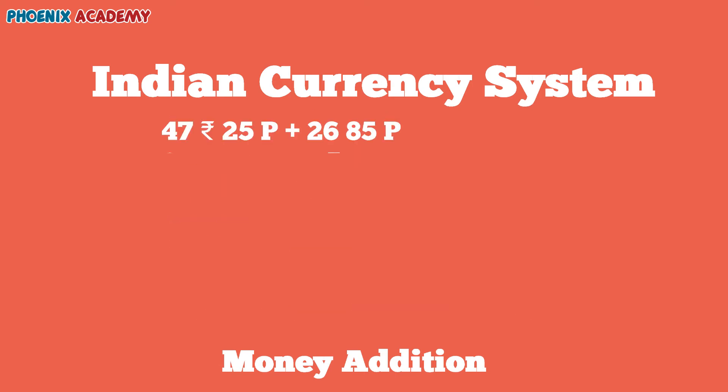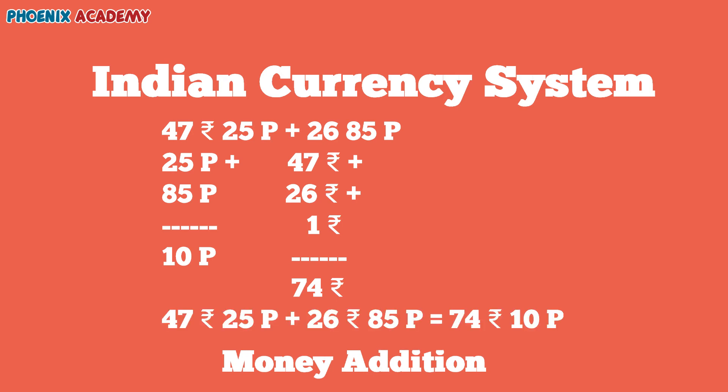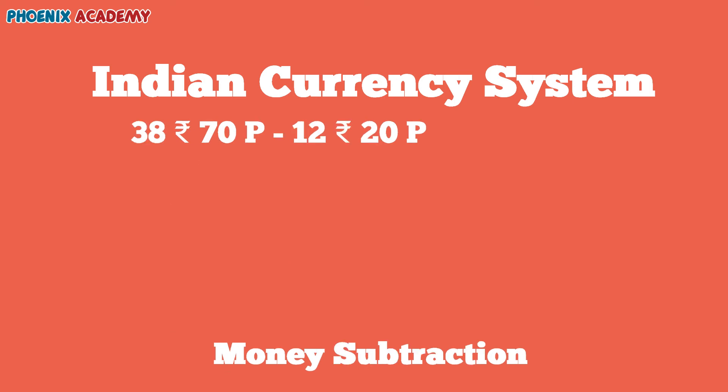Let us add 47 rupees 25 paise and 26 rupees 85 paise. Let's begin with the paise: 5 plus 5 is 10, 1 carry forwarded; 2 plus 8 is 10, plus 1 is 11 — 1 is carry forwarded to the rupees section. Then add rupees: 7 plus 6 is 13, plus 1 is 14 — write 4 and carry 1; 4 plus 2 is 6, plus 1 is 7. So we will get 74 rupees and 10 paise.